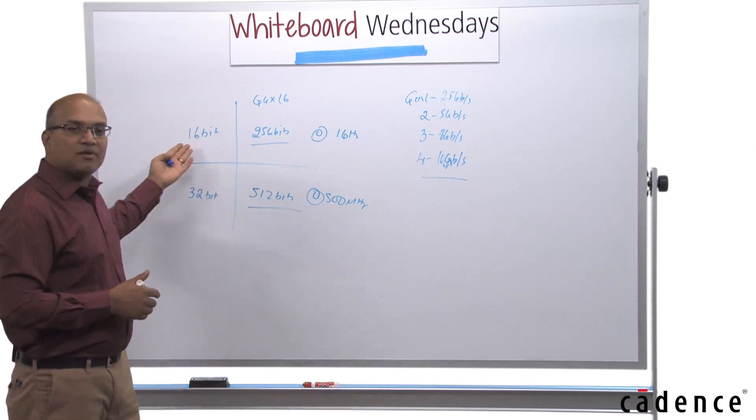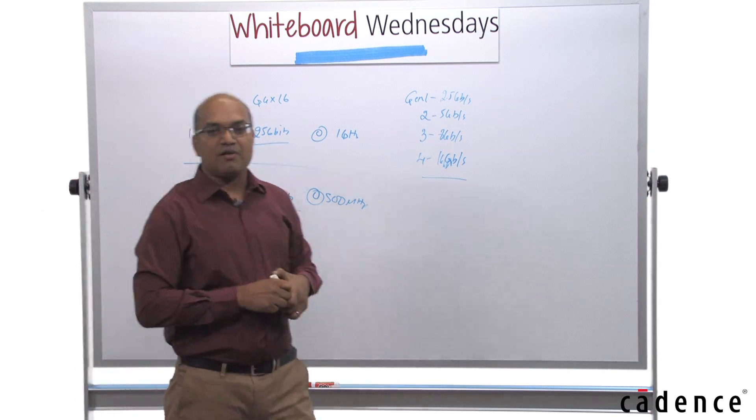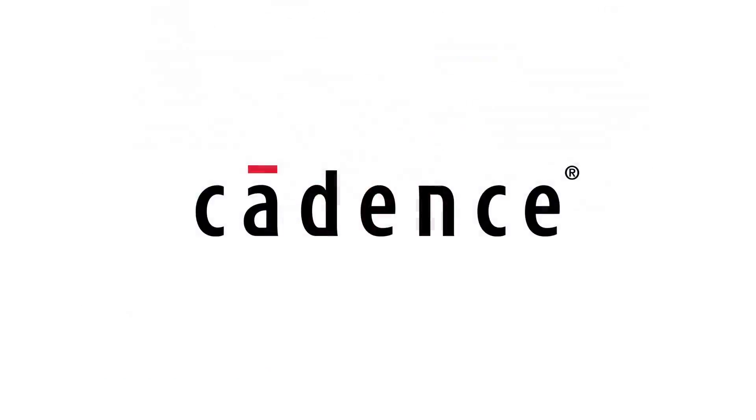So this is the architecture for Gen 4 by 16. If you need to know more about our Gen 4 implementation, please visit ip.cadence.com. Thank you.